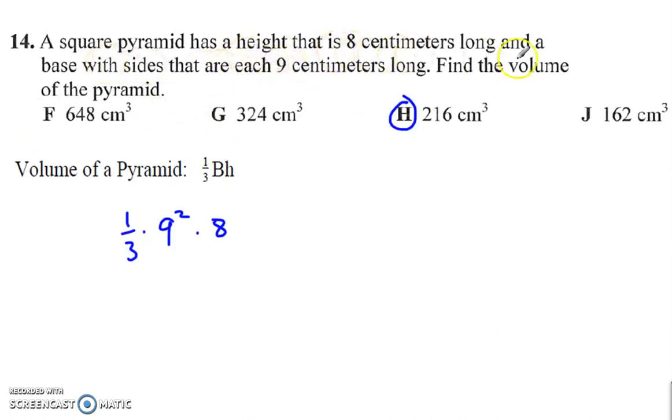Square pyramid has a height that is 8 and a base with sides that are each 9. So the base is a square pyramid, so the base is going to be 9 squared for the base times the height times a third, or divided by 3 gives us 216.